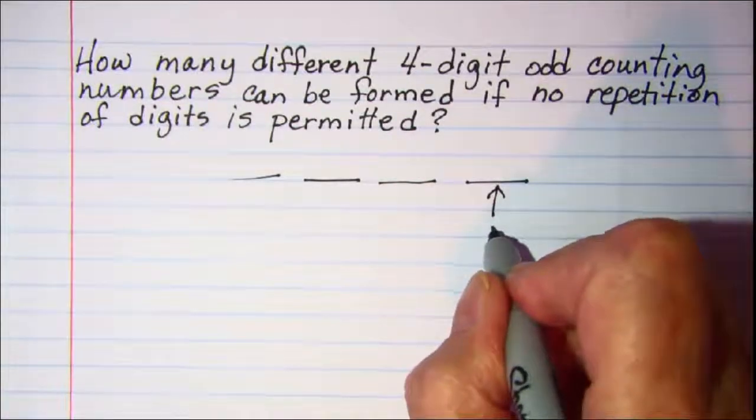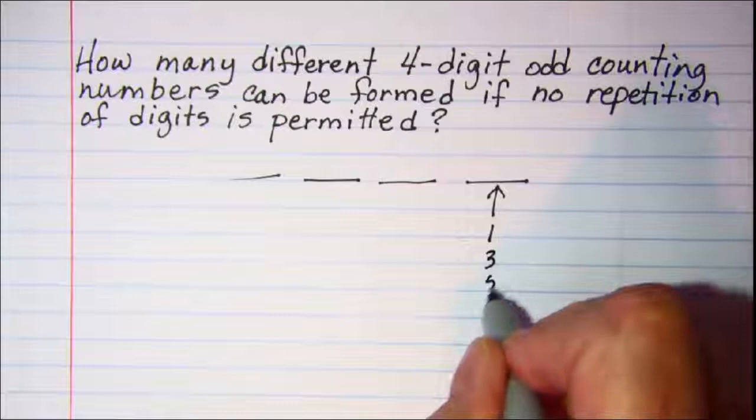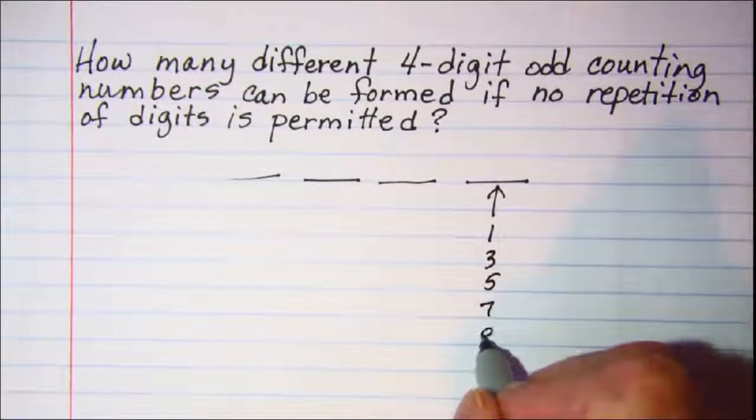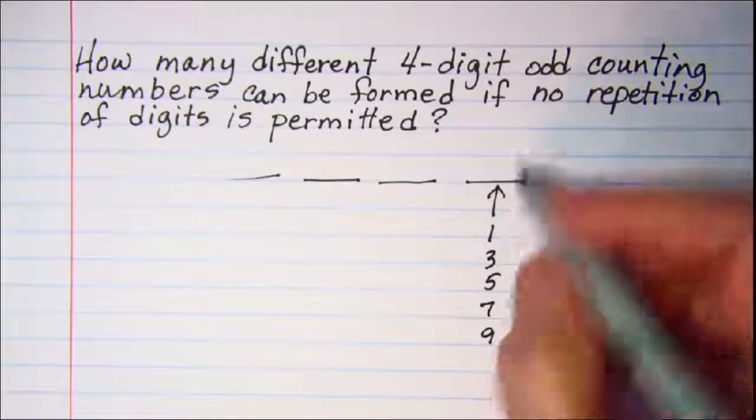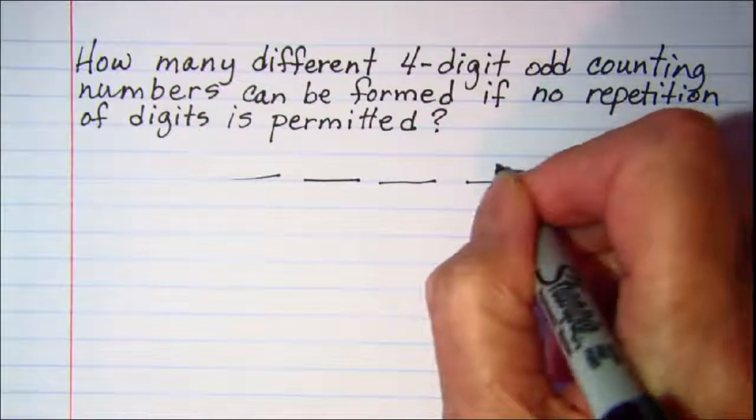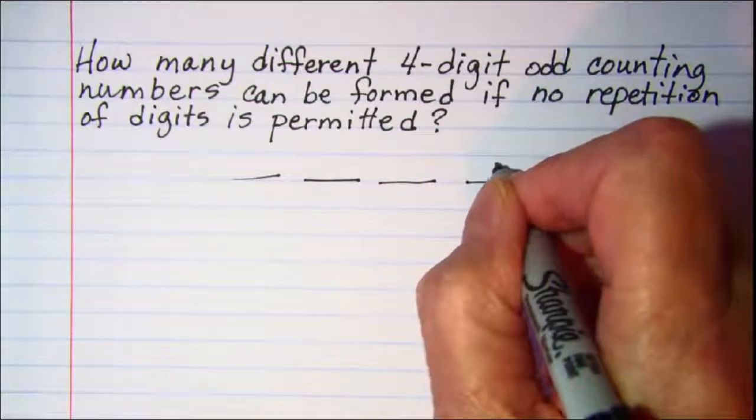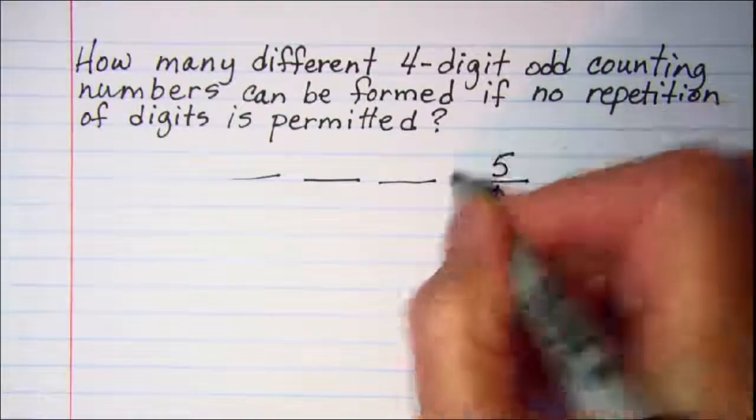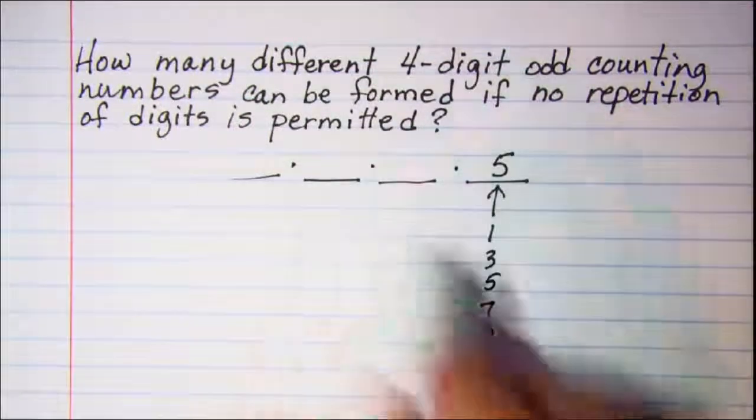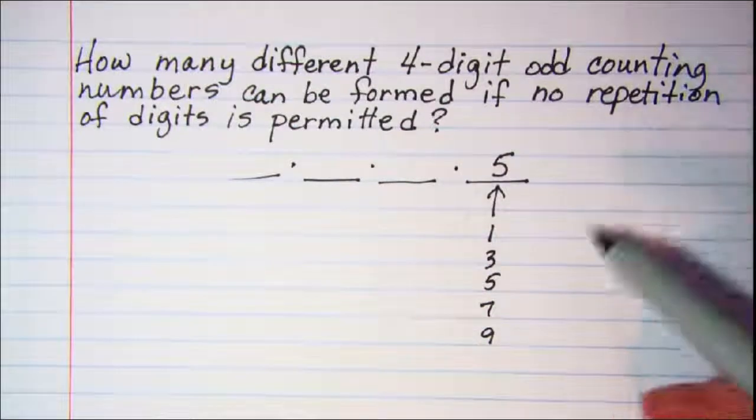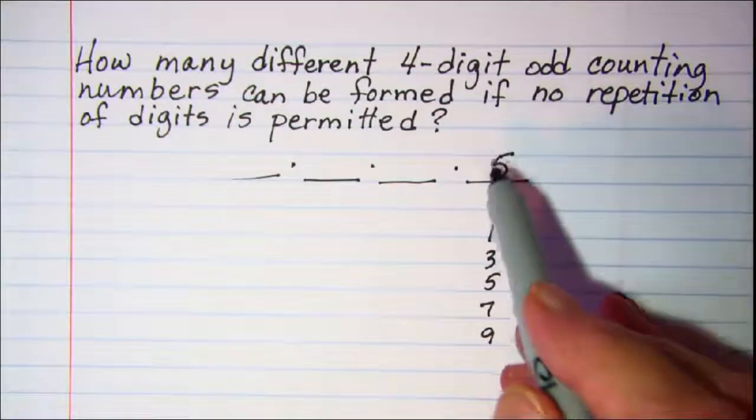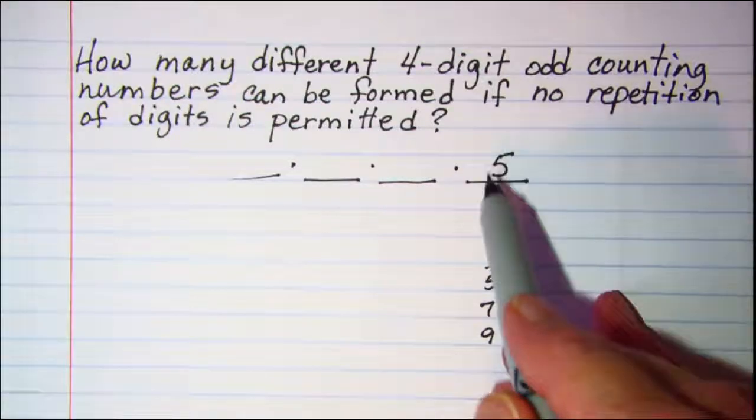So I can choose from 1, 3, 5, 7, or 9 for this spot. So I have five ways that I can choose a digit for the units position. We're going to use our fundamental counting principle. So we'll be multiplying all of these.